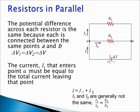I1 and I2 are generally not the same. The ratio I1 to I2 is equal to the ratio of R2 divided by R1.